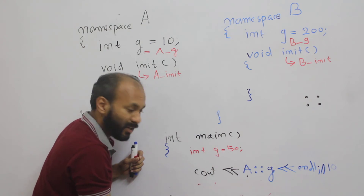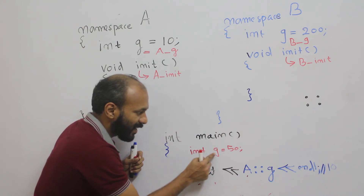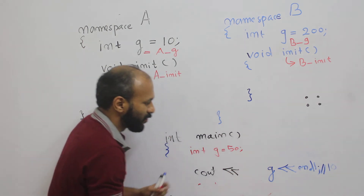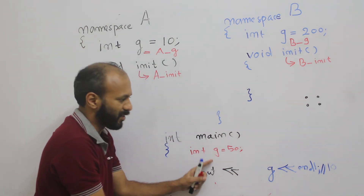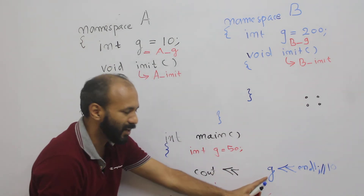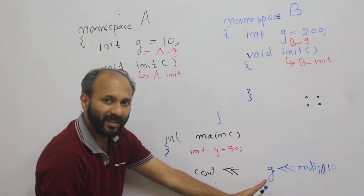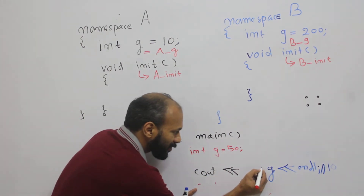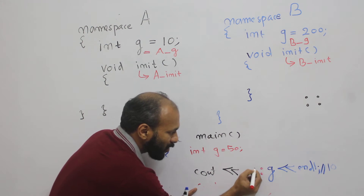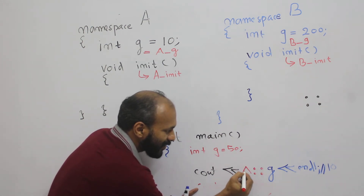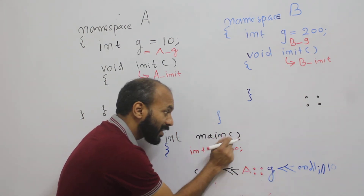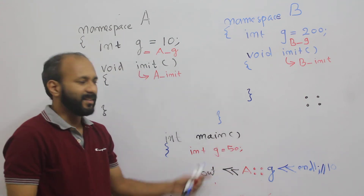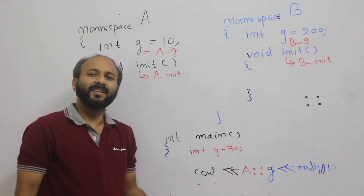So you can have a local variable and directly access it. When you type just g, you are telling the compiler you want to print g which is in the local scope. With the scope resolution operator A::g, you are telling the compiler that this g does not belong to the current scope, it belongs to the scope of namespace A. This is the direct method.